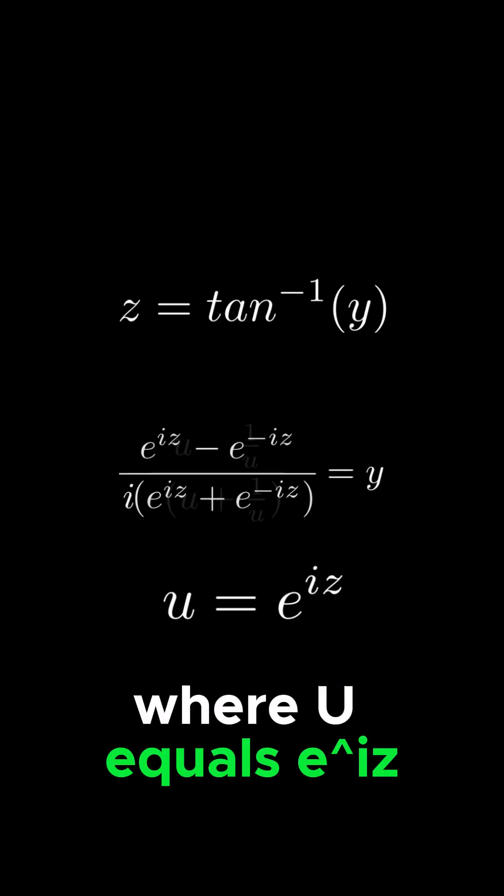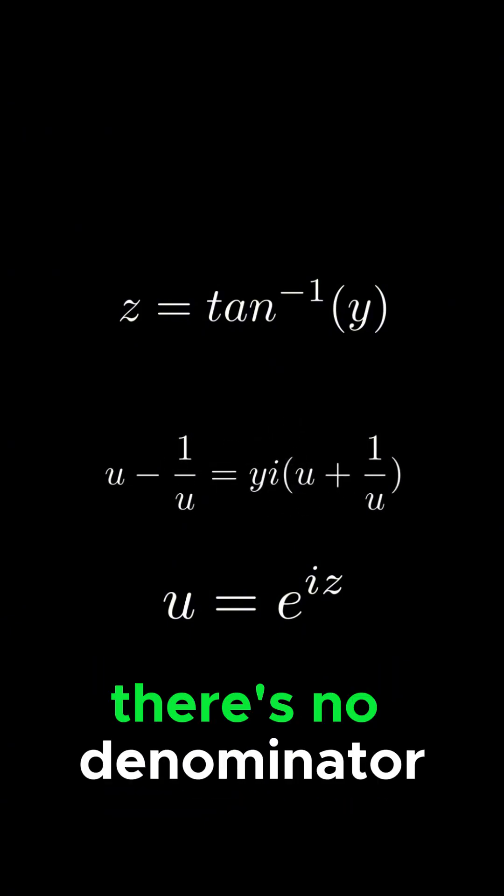Then let's do a u substitution where u equals e to the iz, plug it in, multiply the top and bottom so there's no denominator.